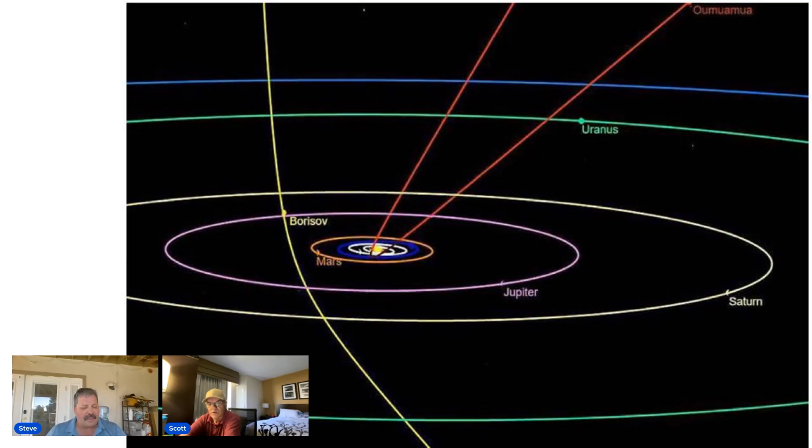Another quote, as Oumuamua passed close to the sun and received its warmth, melting hydrogen would have rapidly boiled off the icy surface, according to the study's lead author, Daryl Seligman. Providing the observed acceleration and also winnowing Oumuamua down to its weird elongated shape, much as a bar of soap becomes a thin sliver after many uses in the shower. Now, that analogy I understand.